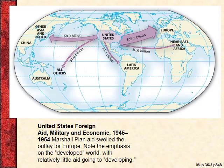Another graphic from your book shows United States foreign aid, both military and economic — primarily the Marshall Plan. You can see about 35 billion dollars to Europe, and about 8 to 9 billion dollars to Asia, most of that actually going to Japan. Fairly microscopic amounts went to the third world.